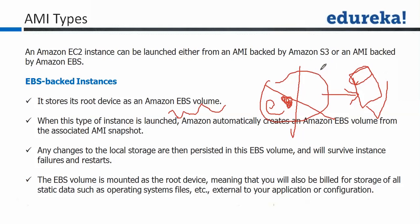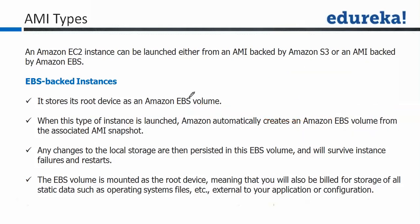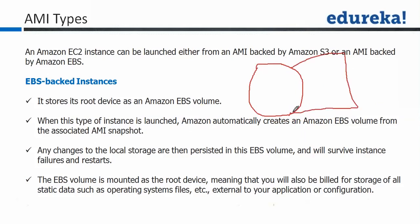Coming back to EC2, there is an AMI type directly available. In that scenario, when you launch an instance it would always have an EBS volume attached as a root device only. So whatever data you are storing is always persistent. There is no ephemeral storage at all available on this instance — all the data is always persistent with EBS.